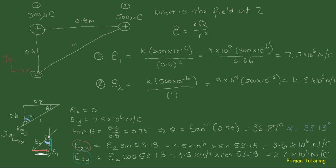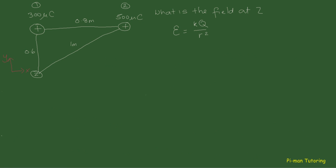So what have we done? We found the total field caused by particle 1 at z and by particle 2 at z — those are E1 and E2. Then we broke each of those fields into its x and y components. Now that we have all the x components and y components, we can go about joining those together with vector addition to find the final resultant field at point z. Let's start a clean sheet to do that.